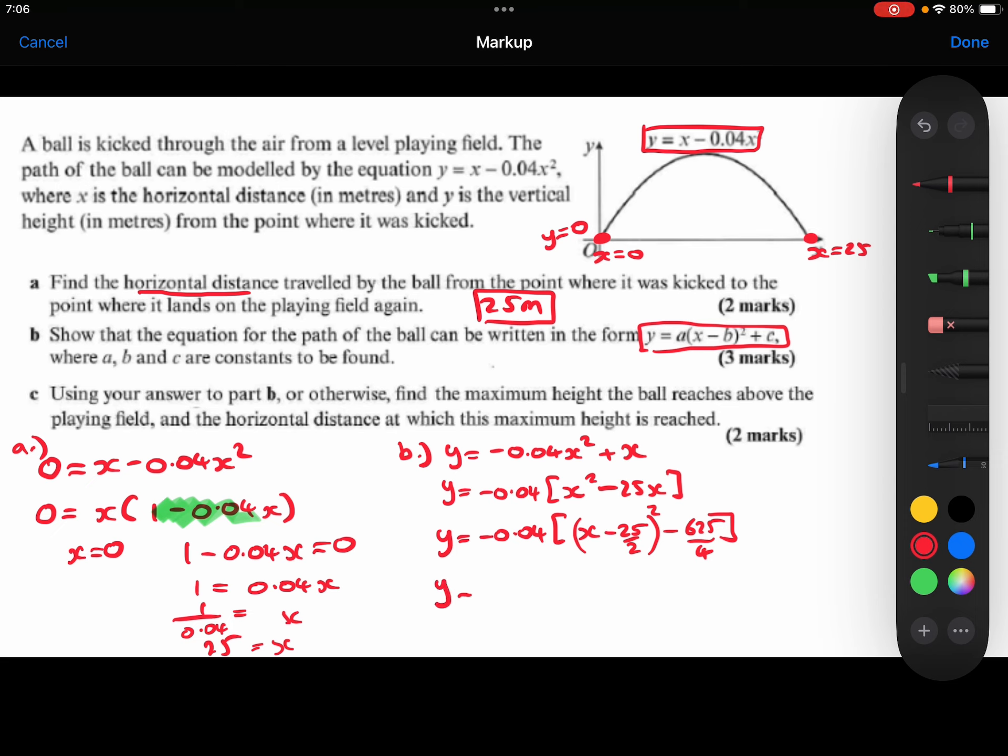So we're now going to multiply out these brackets. So I'm going to have the minus 0.04 multiplied by this. And then we've also got that minus 0.04 multiplied by the minus 625 over 4, which gives a positive 6.25.